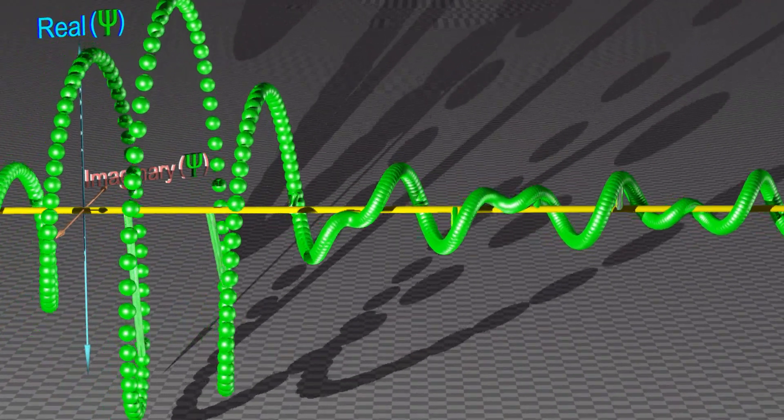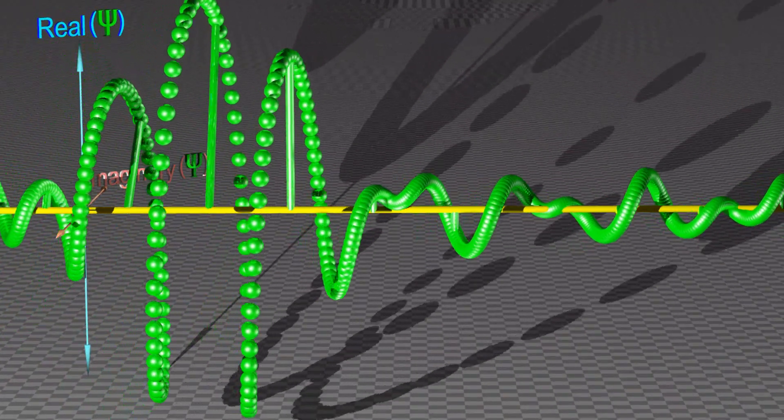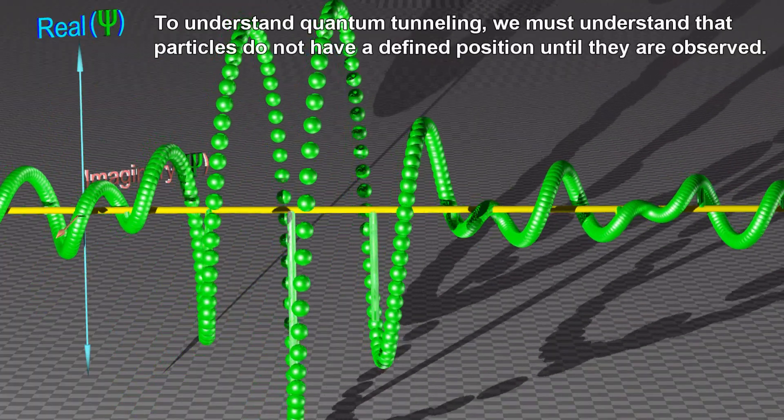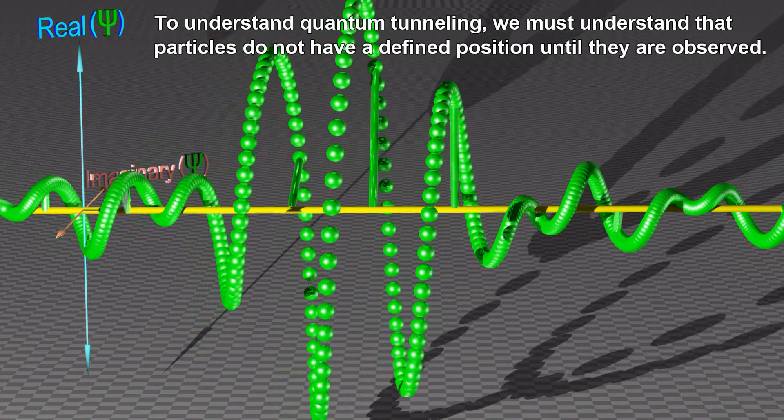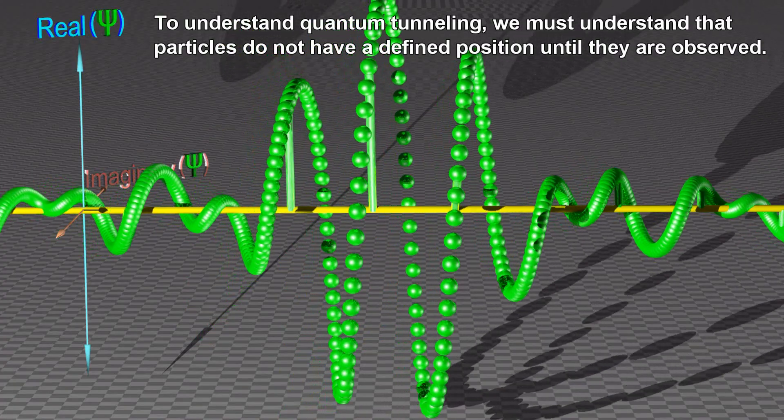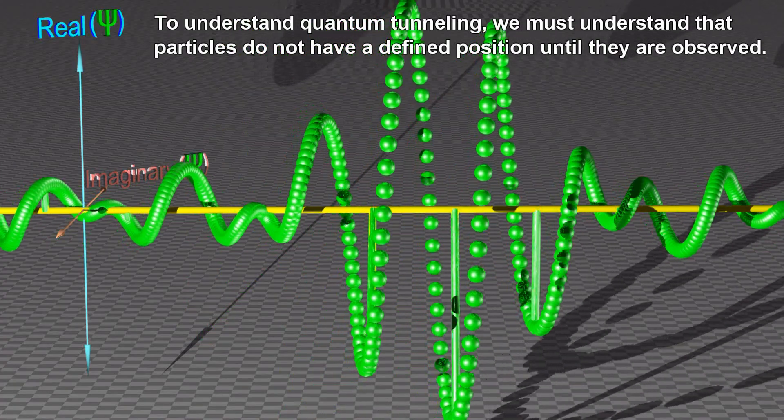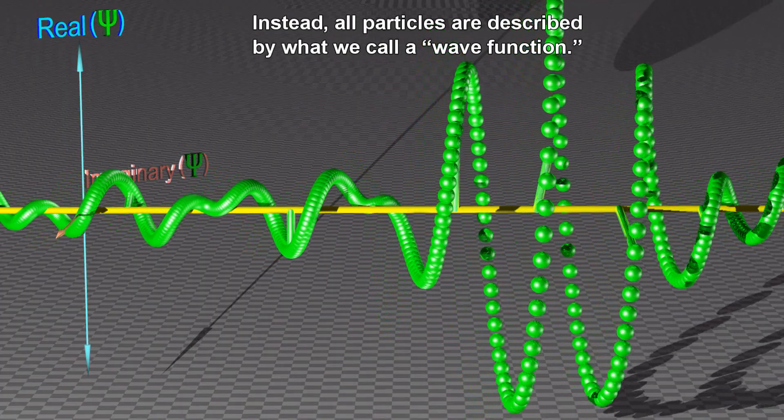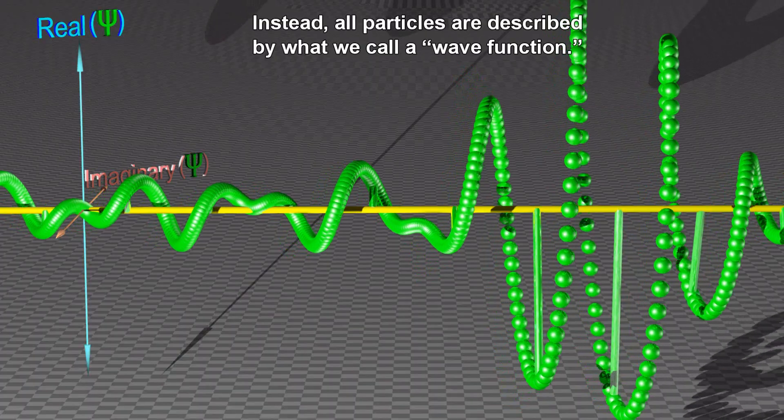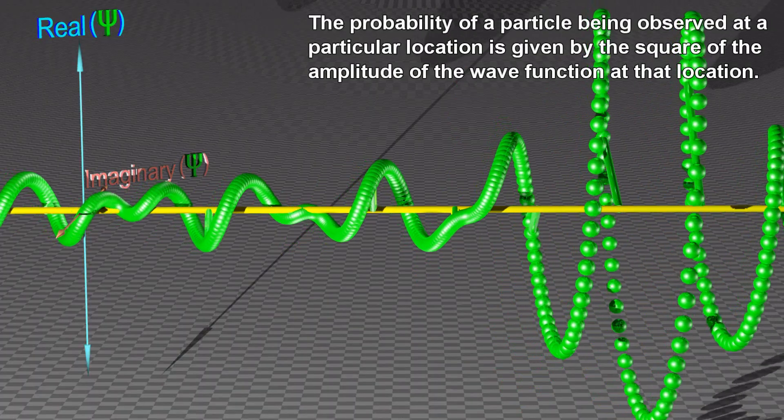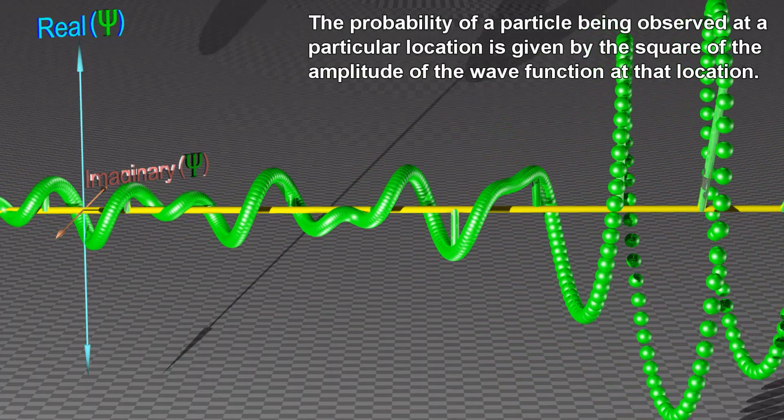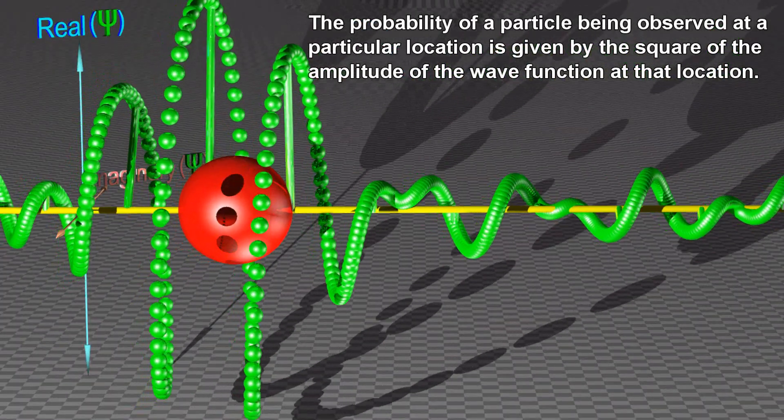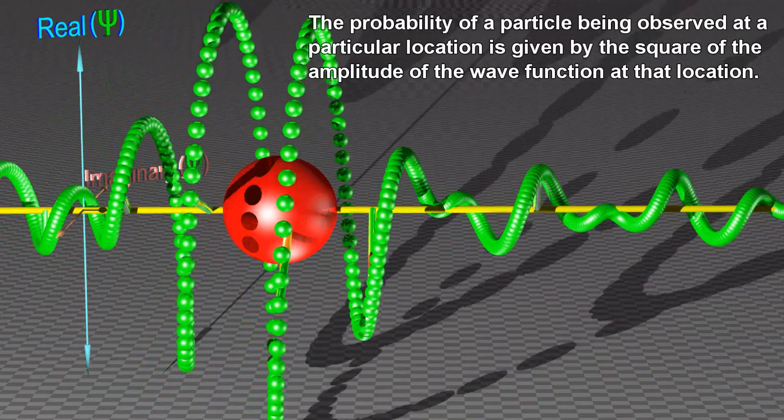This is because quantum tunneling has absolutely no analogy in classical physics. To understand quantum tunneling, we must understand that particles do not have a defined position until they are observed. Instead, all particles are described by what we call a wave function. The probability of a particle being observed at a particular location is given by the square of the amplitude of the wave function at that location.